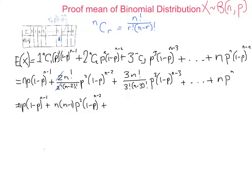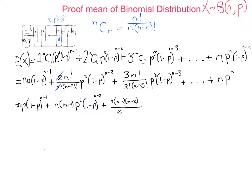For the third term, the 3 cancels with part of the 3 factorial, leaving 2 factorial on the bottom. The n factorial cancels with the (n minus 3) factorial, leaving n times (n minus 1) times (n minus 2) in the numerator, over 2 factorial, times p cubed times (1 minus p) to the n minus 3.